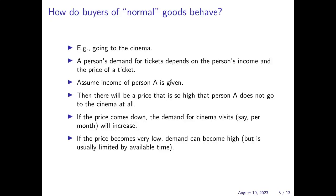To get to the intuition, assume we have a certain normal good, for example, going to the cinema. So the demand that we want to analyze is the demand for cinema tickets per month. Now, a person's demand for such tickets would depend, among other things like the preferences of the person, on the person's income level and the price of a ticket.